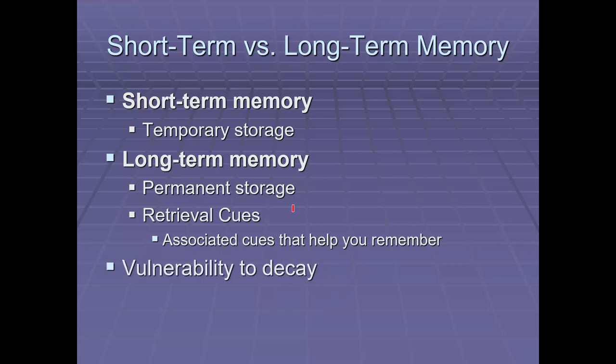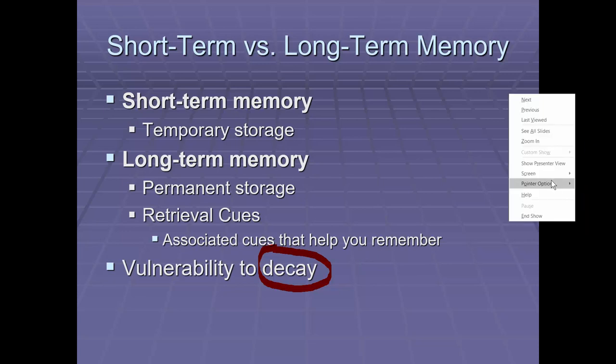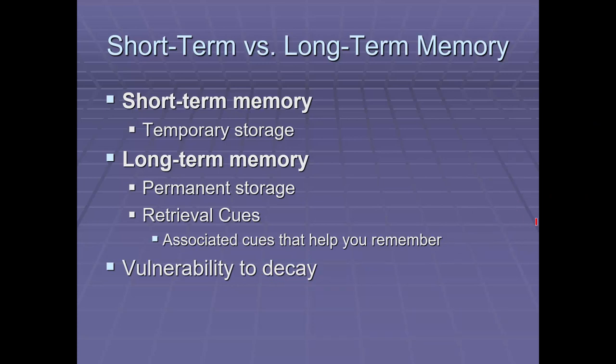Next, we go to vulnerability to decay in terms of how resistant are they to decay. Decay being a natural process that breaks down memories. In fact, scientists have discovered a protein in the brain that seems to weaken or destroy short-term memory. So we call this process decay where the memory naturally withers and decays, or weakens. We're going to look at an example, a study that sort of demonstrates this. This comes from Peterson and Peterson way back, 1959.